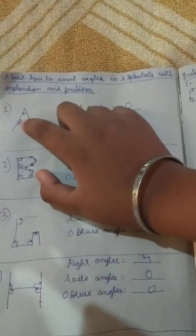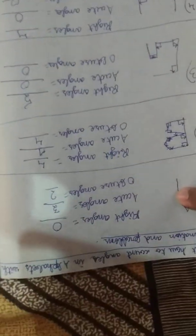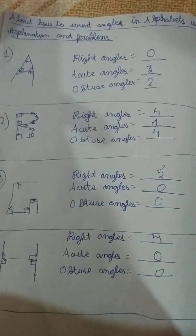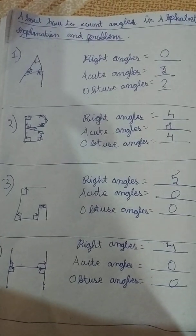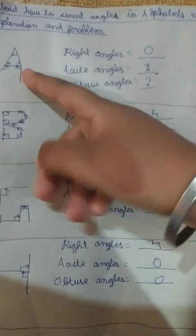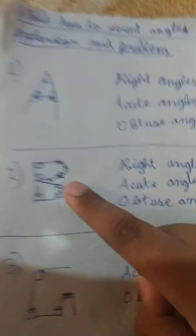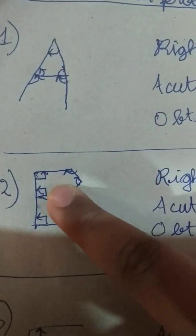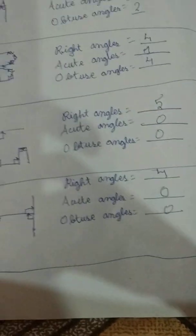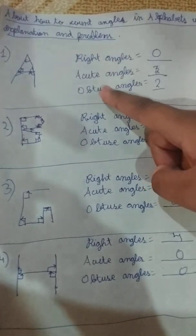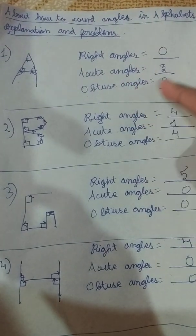And again two obtuse angles. One obtuse angle, two obtuse angles. So there are no right angles in A. But while counting angles in alphabets, we have to write only in straight lines. A already has straight lines, that's why I have not written curved. Because while counting angles in alphabets, we have to write only in straight lines. Means A alphabet has three acute angles and two obtuse angles.